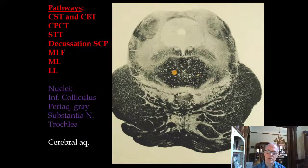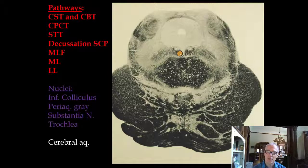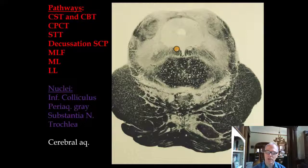Approximately 99% of the superior cerebellar peduncle is cerebellar output to the motor cortex. The medial longitudinal fasciculus is consistently seen in this location. The new nucleus here is the trochlear nucleus — we see the nucleus here, and on the next slide we'll see how the nerve exits on the dorsum of the midbrain.